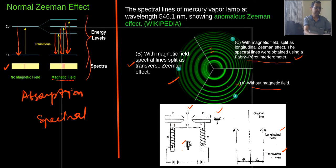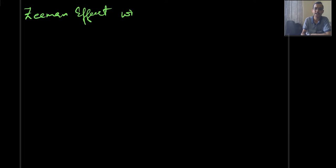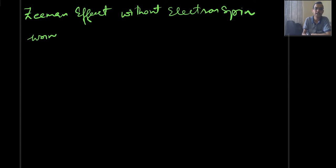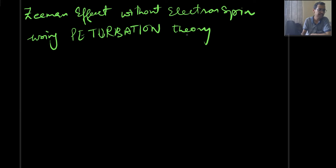Now I will apply perturbation theory to explain the Zeeman effect without electron spin — that is, we have not considered the spin-orbit coupling. So here we will discuss the Zeeman effect without electron spin using perturbation theory.